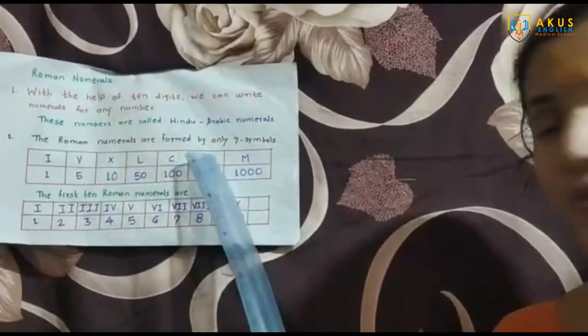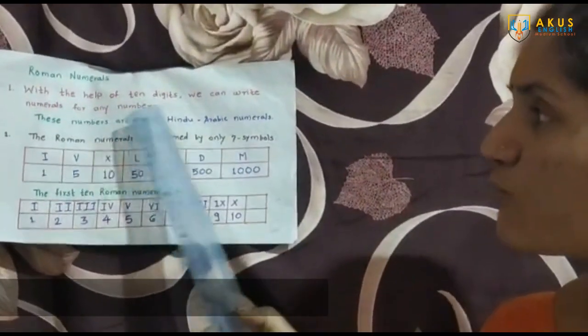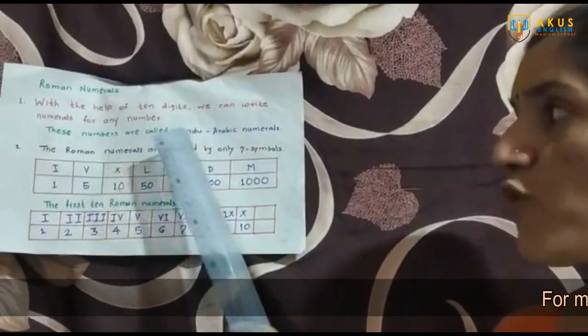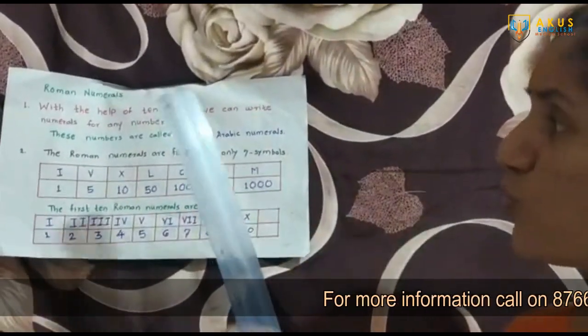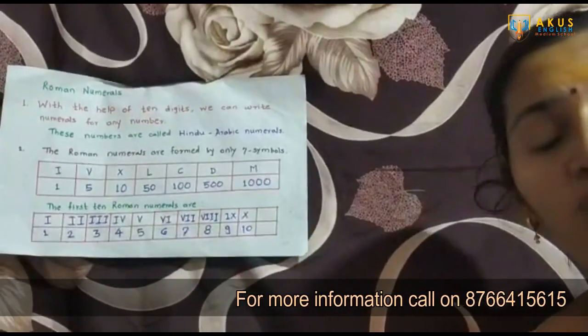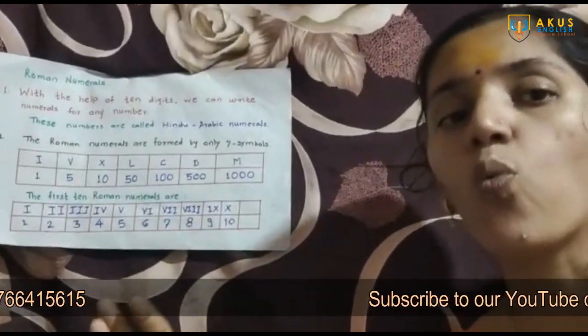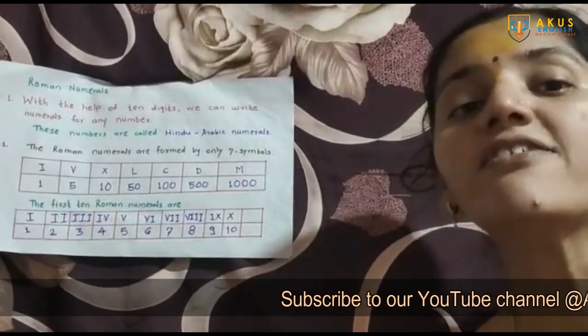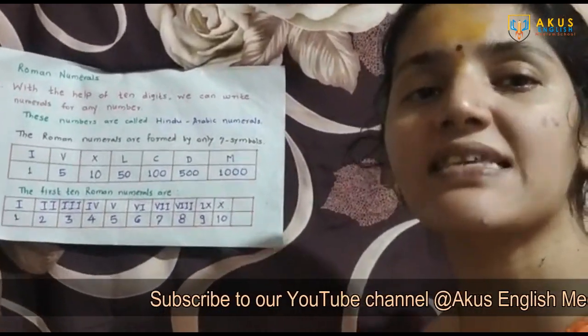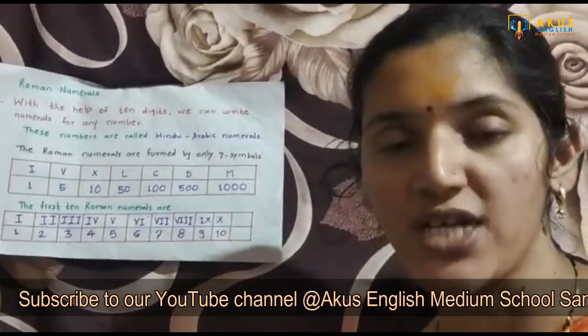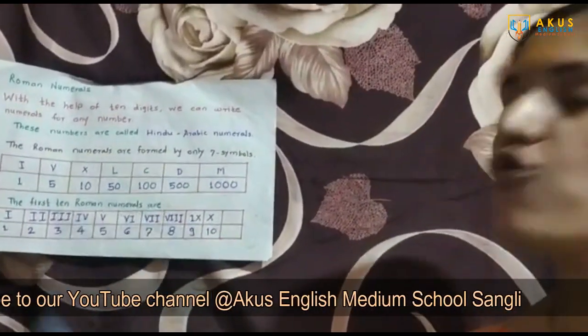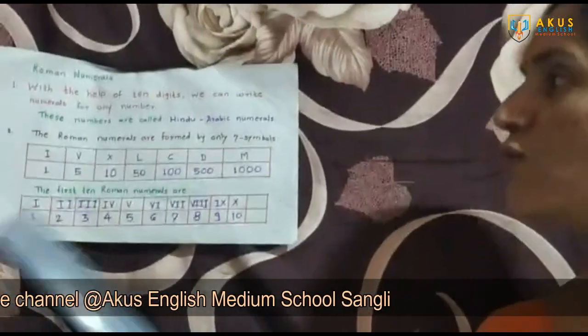Now, with the help of 10 digits we can write numerals for any number, and these numbers are called Hindu-Arabic numerals. The 10 digits with the help of which we can form any number — even thousands or infinite numbers — are: 0, 1, 2, 3, 4, 5, 6, 7, 8, and 9. With these 10 digits we can form any number.